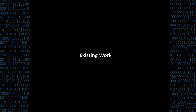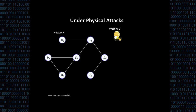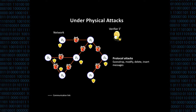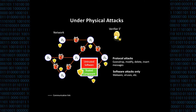Our problem is how to attest a network of a large number of connected devices and check if they are in the correct state. Existing work assumes that all devices in the network have a secure component. It only considers protocol attacks where the adversary can eavesdrop, modify, delete, or insert messages, and software attacks where the adversary can only modify the untrusted software by inserting malware or viruses. However, the adversary cannot attack the trusted component.